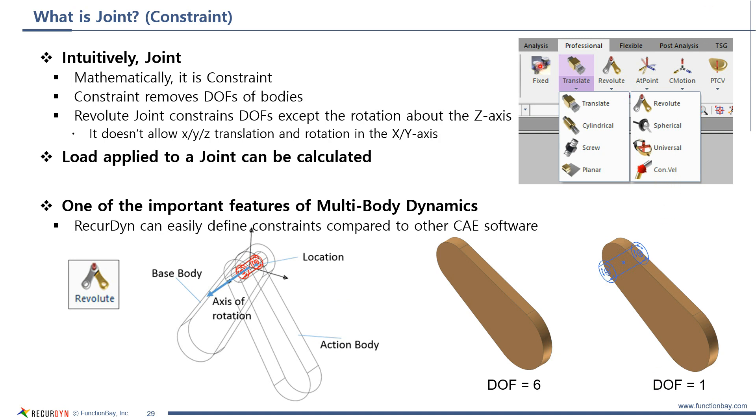RecurDyn provides various kinds of joint. The joint is one of the important features of multibody dynamic software like RecurDyn. RecurDyn makes it easy to constrain bodies using joints compared to other CAE software.